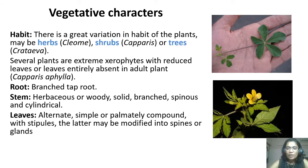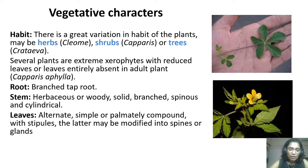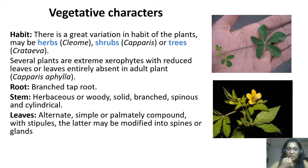Looking at vegetative characters, there is very great variation in the habit of this plant. Some are herbs — Cleome is the genus which shows all herbaceous habits. Some are shrubs — Capparis. Then there are trees — Cratevia is the tree which shows the tree habit in this family. One more interesting plant from this family is Capparis aphylla, which is an extreme xerophyte that doesn't have a single leaf — the leaves are entirely absent.